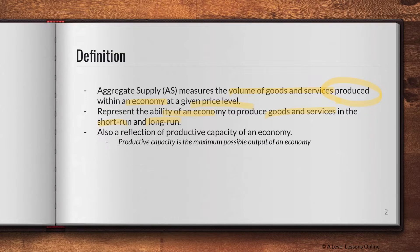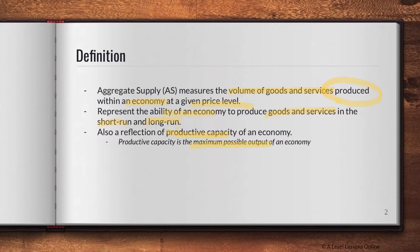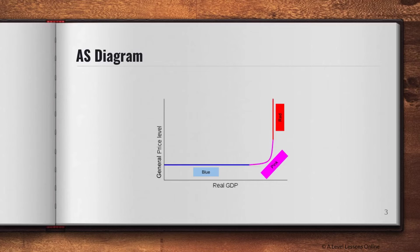AS can affect real GDP and the general price level (GPL) in both the short run and long run, whereas AD tends to only have a large impact in the short run. AS is also a reflection of the productive capacity of an economy. Productive capacity basically means the maximum possible output of an economy, so the AS curve shows you how much your maximum output will be when all resources are being employed.